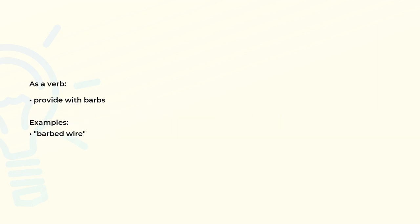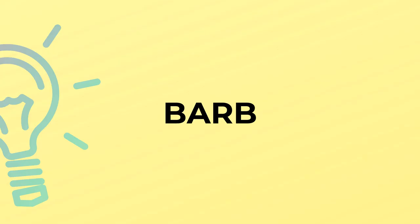As a verb: provide with barbs. Examples of use: barbed wire. Barb is spelled B-A-R-B.